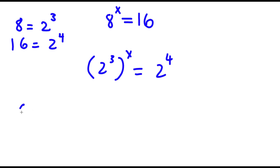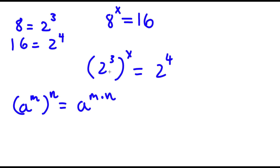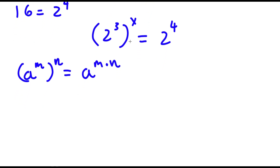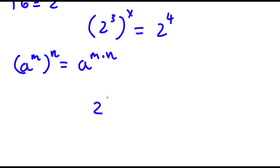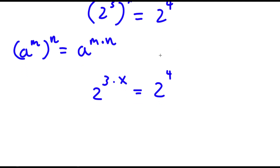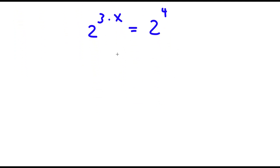Now, if I have something in the form a to the power of m to the power of n, this is equal to a to the power of m times n. So 2 to the 3 to the power of x is going to equal 2 to the power of 3 times x, which is equal to 2 to the power of 4. And 3 times x is simply 3x, so I have 2 to the power of 3x is equal to 2 to the power of 4.